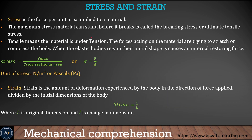The next thing we'll learn is stress and strain. Stress is the force per unit area applied to a material. If you have an object and apply a load, you can find the cross-sectional area and the amount of force needed to deform it — that is stress. For strain, if you pull an object and it deforms, strain equals the increased length divided by the total length — it has no unit.